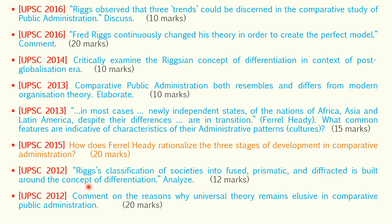In 2012, UPSC asked: 'Riggs's classification of societies into fused, prismatic, and diffracted is built around the concept of differentiation — analyze for 10 marks.' Also asked was: 'Comment on the reasons why a universal theory remains elusive in comparative public administration — for 20 marks.' We discussed a complete slide on why no universal theory of CPA exists; write that for 20 marks.